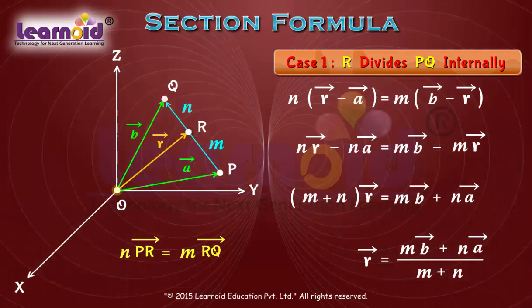Hence, the position vector of the point R dividing PQ internally in the ratio m is to n is given by OR vector is equal to r vector, which is equal to m times b vector plus n times a vector divided by sum of the ratios m plus n.